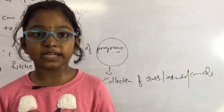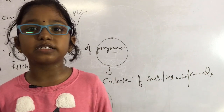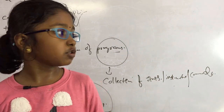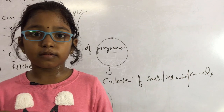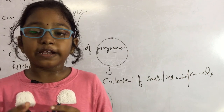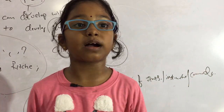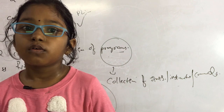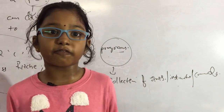What is C? C is a programming language. What is a language? A language is a mediator which is used to interact with others. What is a programming language? It is also a language which is used to interact with a computer. With a programming language, we can develop software.